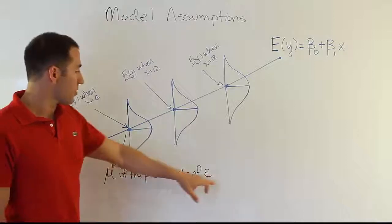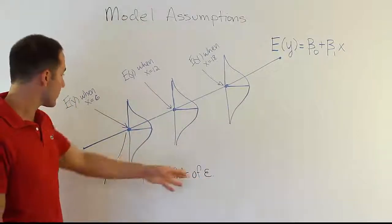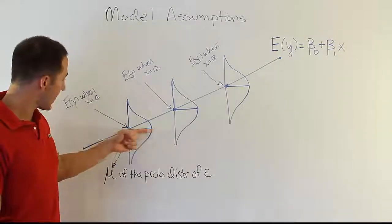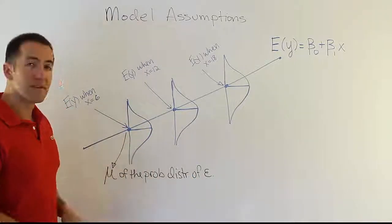Which is basically what it's saying then is that the average, the mean for the probability distribution of the error term is essentially zero. Because of course, the observed value minus the predicted value at that location would be zero.